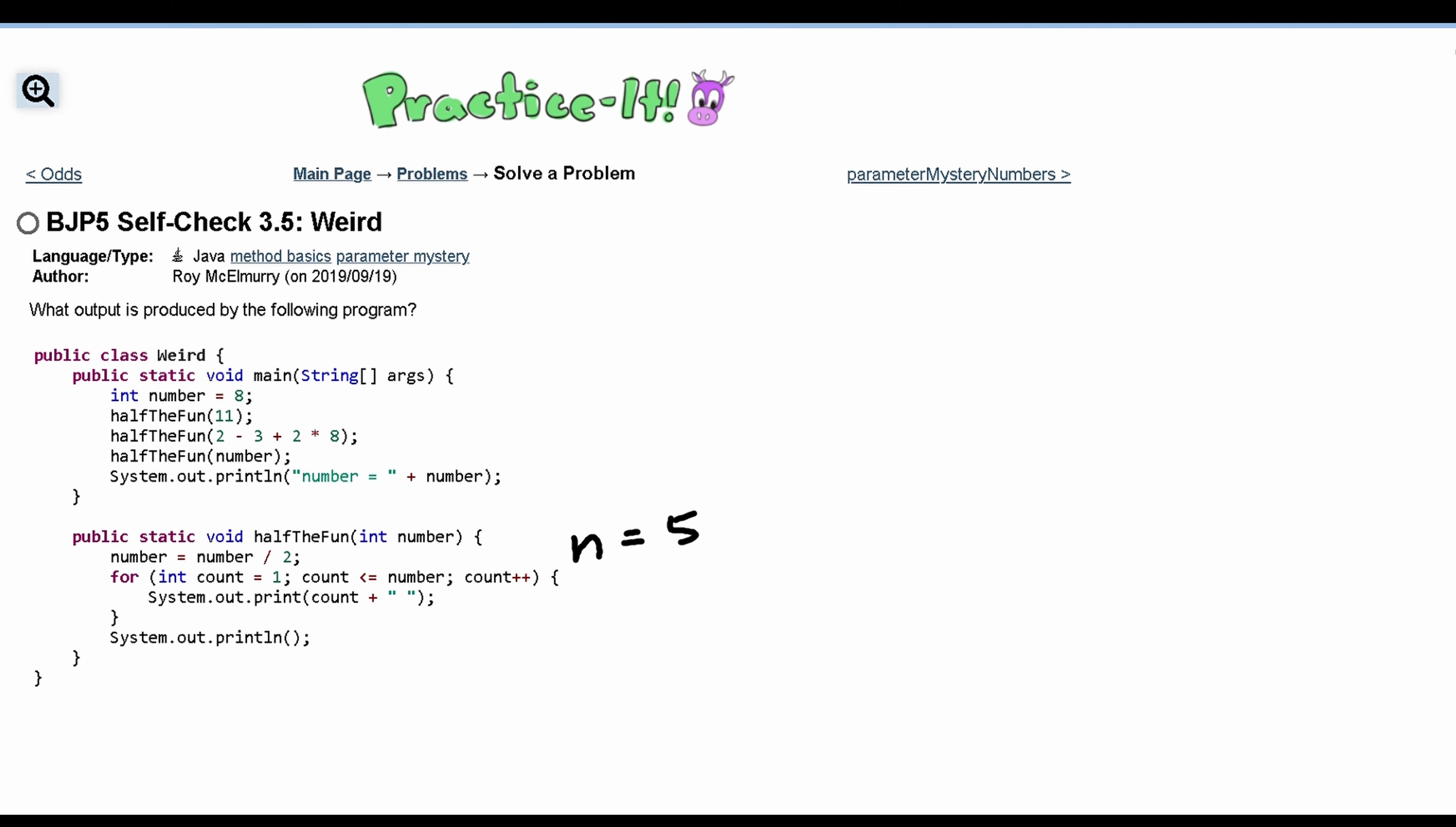We have this is going to run until count is equal to 5 so it's going to run five times and we're just printing out count and then a space all in the same line and then when this loop breaks we print out a new line.